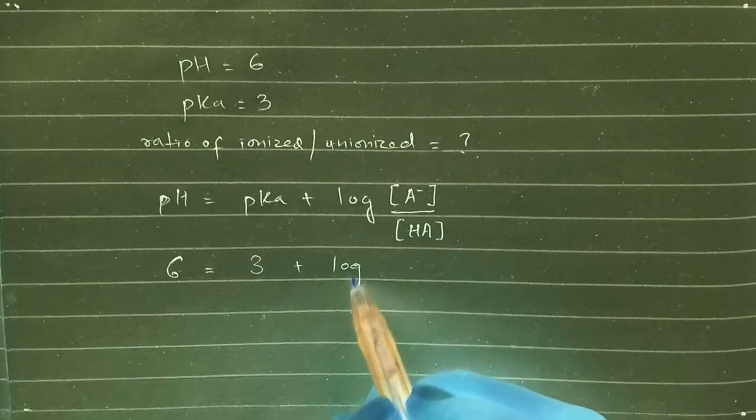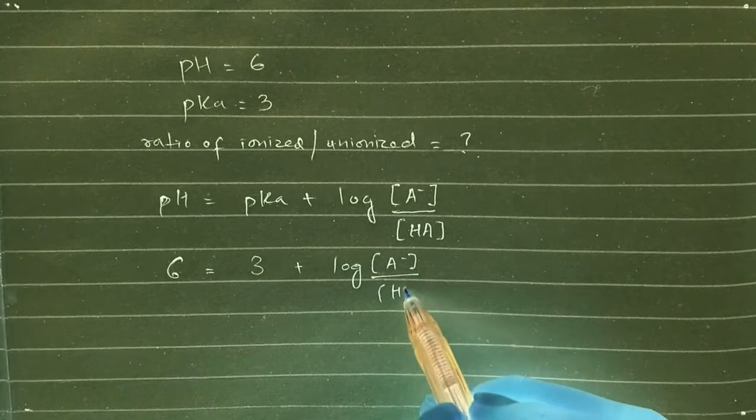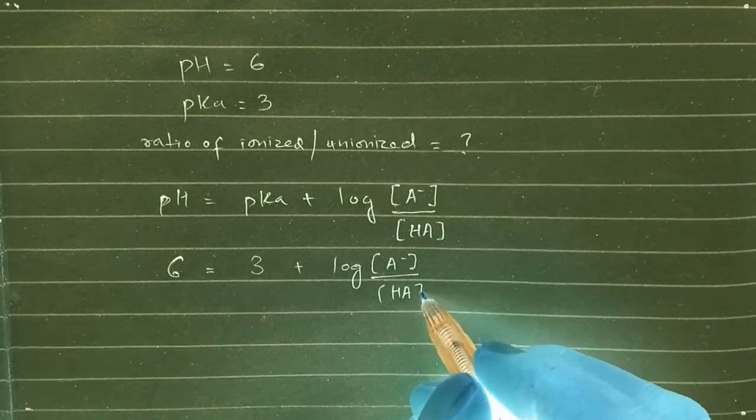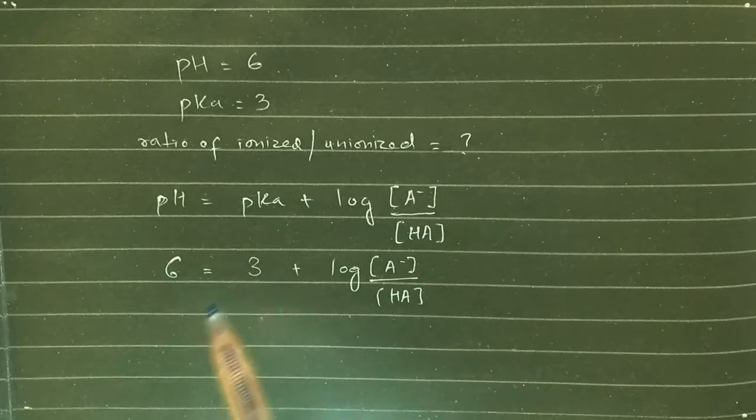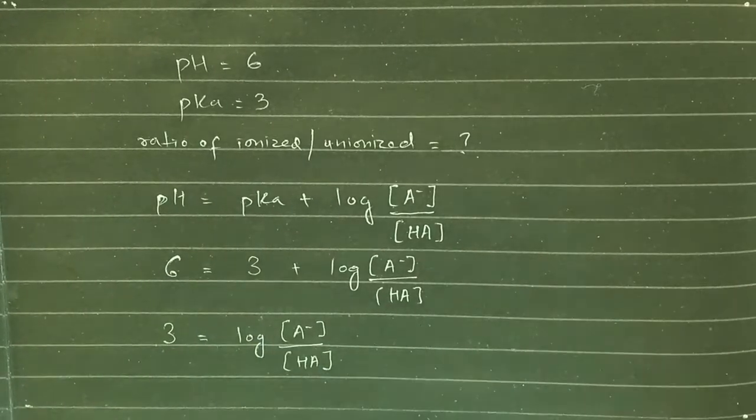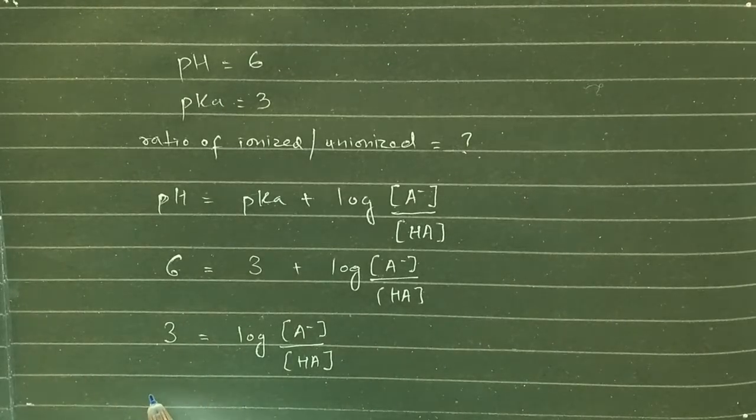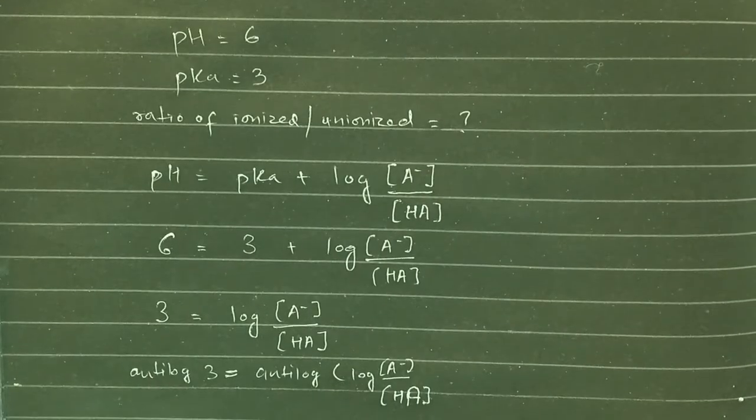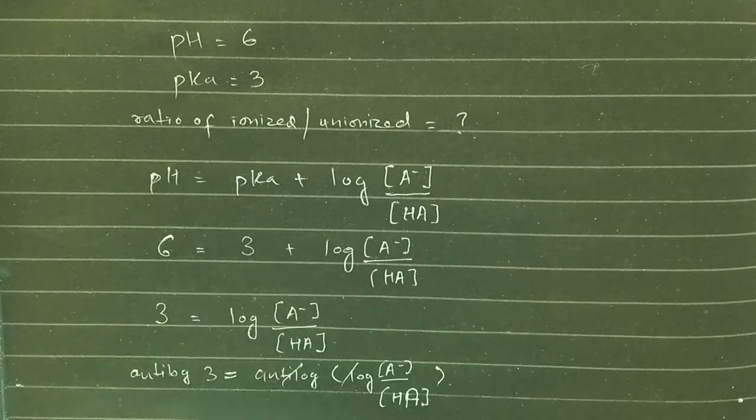Log of [A-] divided by [HA]. So solving it further, 6 minus 3 will be 3 equal to log of [A-] divided by [HA]. So now applying antilog on both the sides, well this will cancel each other out.